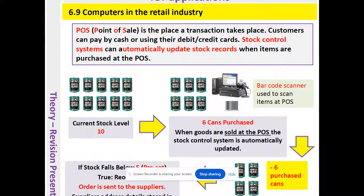We also have automatic stock control systems in shops. The point of sale is where the transaction takes place — customers can pay by cash or use their debit or credit cards. Stock control systems can automatically update stock records when items are purchased at the point of sale.